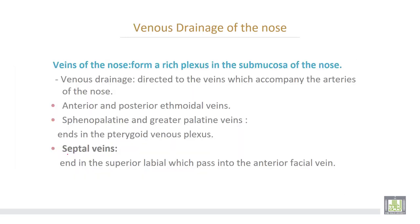Venous drainage of the nose: the veins of the nose form a rich plexus in the submucosa. Venous drainage is directed to veins which accompany the arteries of the nose, starting with the anterior and posterior ethmoidal veins, which are directed upward through the cribriform plate to enter the cranial cavity and end in the cavernous sinus, and can be considered emissary veins. The sphenopalatine and greater palatine veins end in the pterygoid venous plexus.